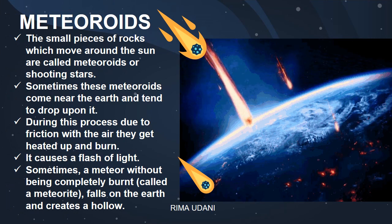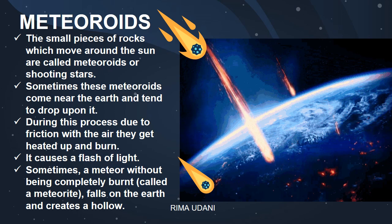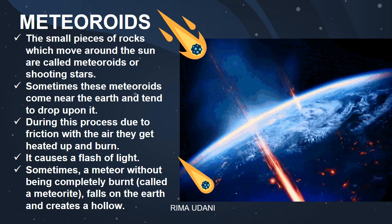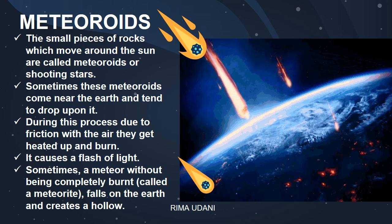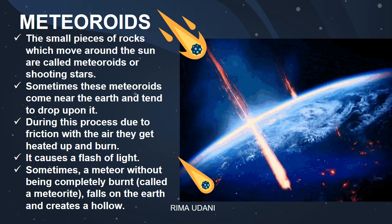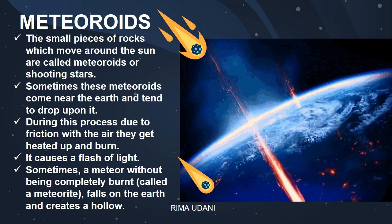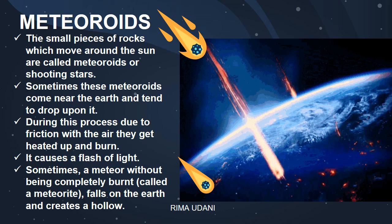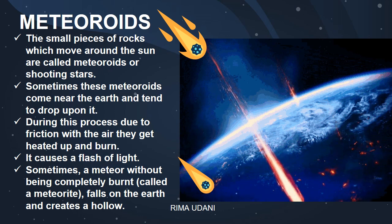Just like asteroids, there are meteoroids. These are small pieces of rocks which move around the Sun. They are also called shooting stars. Sometimes these meteoroids come near the Earth and tend to drop upon it. During this process, due to friction with the air, they get heated up and burn, causing a flash of light. Every meteoroid has a small tail. Sometimes a meteor without being completely burned, called a meteorite, falls on the Earth and creates a hollow.